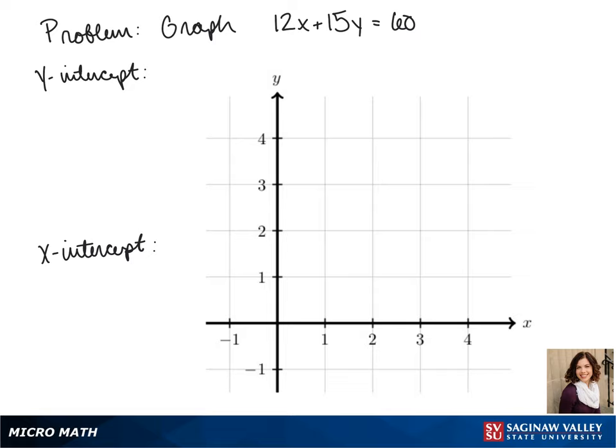To solve for our y-intercept, we plug in 0 for x. That gives us 15y equals 60. This is sometimes called the cover-up method because it's like we're covering up the term attached to x. We solve for y and get 4, so our y-intercept is (0,4).